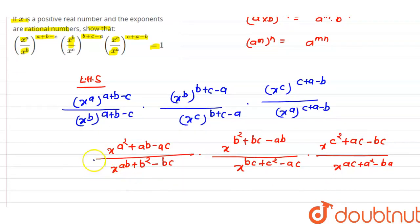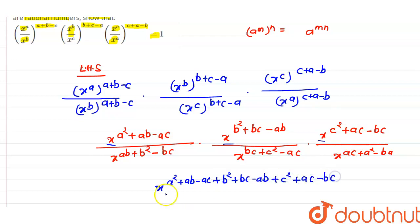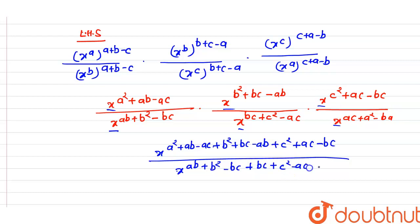Since the base is the same, in multiplication the powers are added. So the numerator becomes x raised to the power (a²+ab−ac + b²+bc−ab + c²+ac−bc), and the denominator becomes x raised to the power (ab+b²−bc + bc+c²−ac + ac+a²−ab).